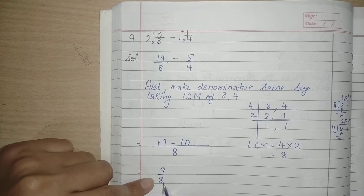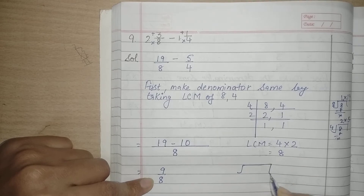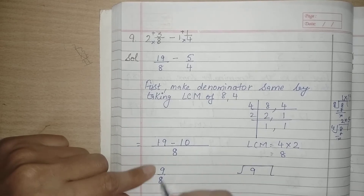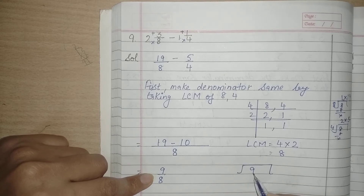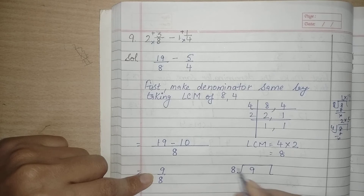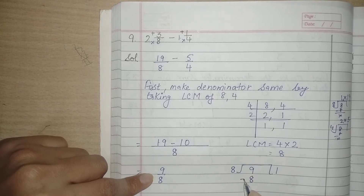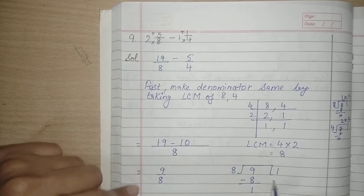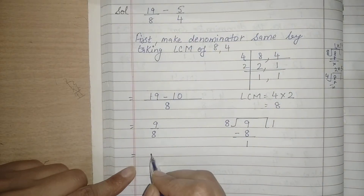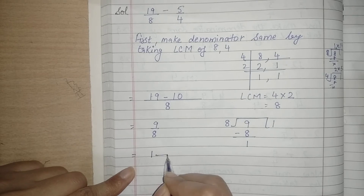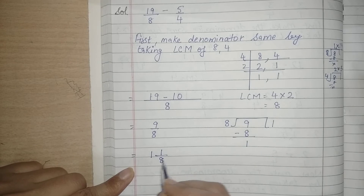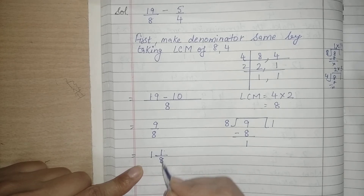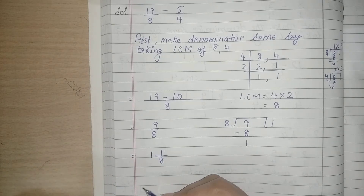Now this is an improper fraction. It means hume is ko mixed fraction mein change karna padega. Jab bhi humara answer improper mein aayega, hum us ko always convert it into the mixed fraction. So let's divide by 8: 8 once is 8 — 9 minus 8 it is 1. So we write the quotient as a whole number, remainder as the numerator, aur divisor as the denominator. So finally the answer is 1 whole 1 by 8.